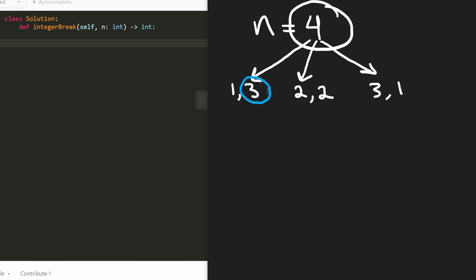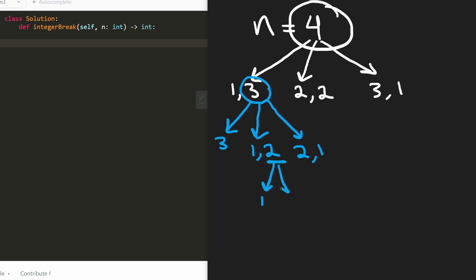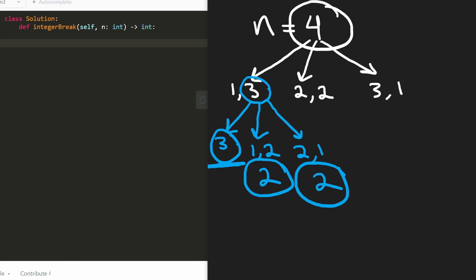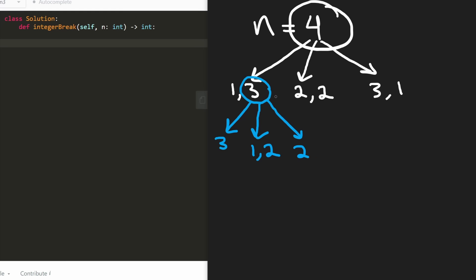For three we have multiple decisions: we can leave it as it is, break it into one and two, or break it into two and one. One times two is two, two times one is two, but leaving it as three gives three. Among these, three is the maximum. So what we learned from the decision tree is that we should just leave the three as it is — there's no need to break it down any further.